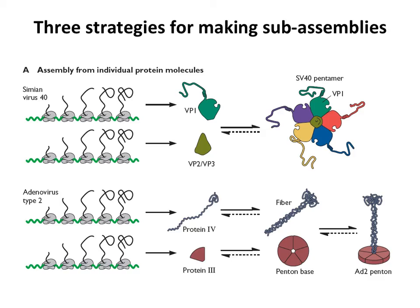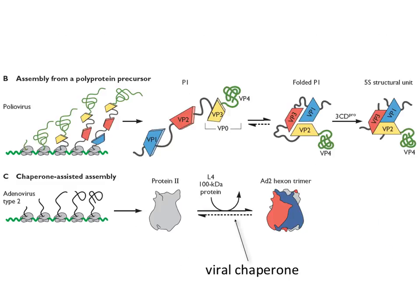Here is adenovirus — another example of assembly from individual protein molecules. Here we're making a penton with a fiber attached, located at each of the fivefold axes of symmetry, giving adenovirus that satellite-type look. The fiber is made from one protein that then trimerizes; the penton base is made from a single protein where five associate to form the penton base; then the fiber associates with it. Individual polypeptides fold properly and assemble to form a subassembly.